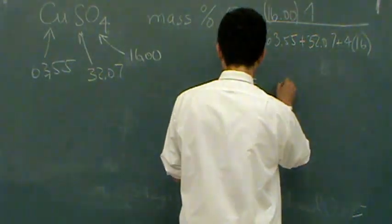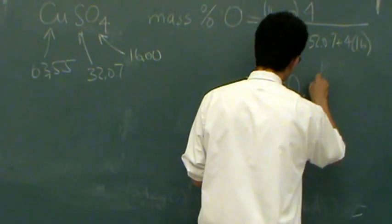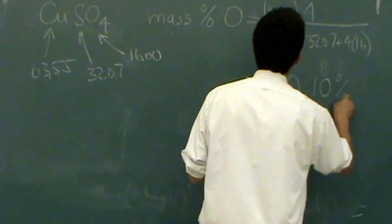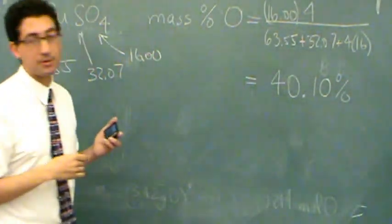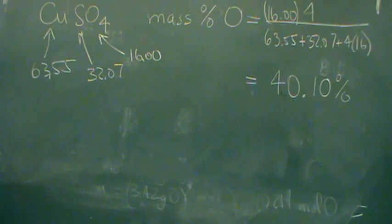I'm going to get 40 point, really, one zero. I'll do four sig figs, since everything I wrote down was pretty much four sig figs. Does that make sense? Yeah.